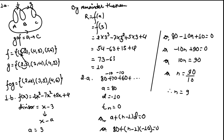Question 1b: define the remainder theorem. For the remainder theorem, you can see my previous videos. The next part: find the remainder using the remainder theorem when 2x³ − 7x² + 5x + 4 is divided by x − 3. We compare x − 3 with x − a to get a = 3. By the remainder theorem, r = f(a) = f(3), and substituting 3, we finally get 10.